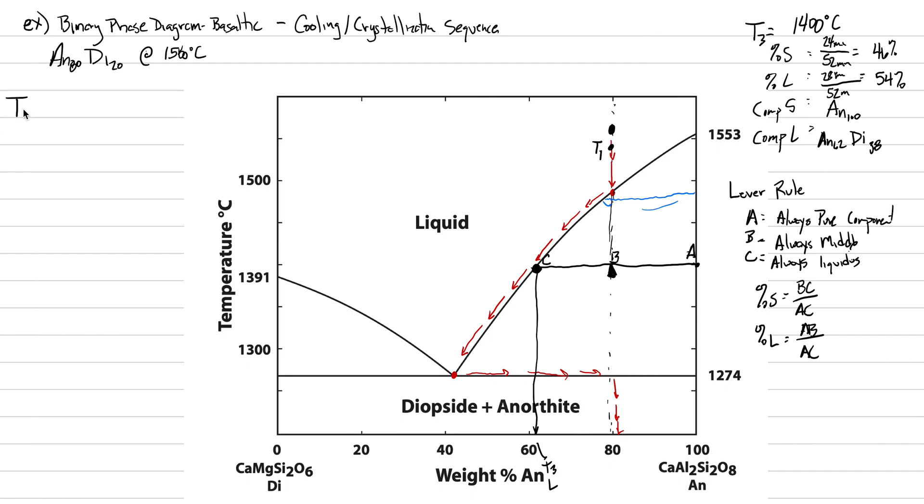T4 at 1300 degrees C. We're going to put in our line and label our lever rule A, B, and C. Look how much bigger the line BC is now. It's colder, it's crystallized more. Percent solid, percent liquid, composition solid, composition liquid.